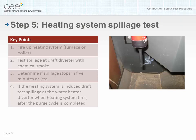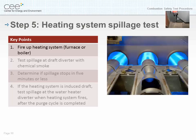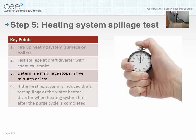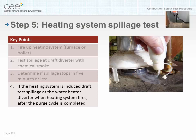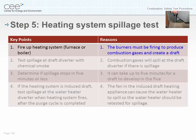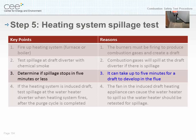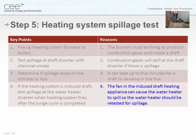Step five: heating system spillage test. Key points: number one, fire up the heating system — the furnace or the boiler; number two, test for spillage at the draft diverter with chemical smoke; number three, determine if spillage stops in five minutes or less; number four, if the heating system is induced draft, test spillage at the water heater diverter when the heating system fires after the purge cycle is completed. Reasoning: burners must be firing to produce combustion gases and create a draft; combustion gases will spill at the draft diverter if there is spillage; it can take up to five minutes for a draft to develop; and the fan in the induced draft heating appliance can cause the water heater to spill, so the water heater should be retested for spillage.